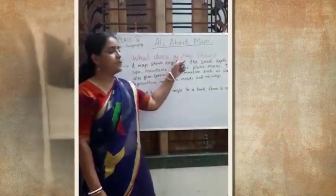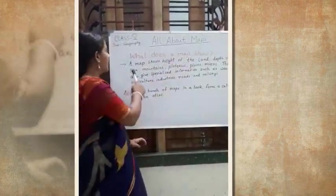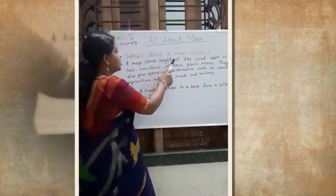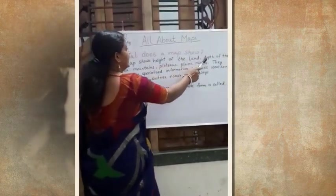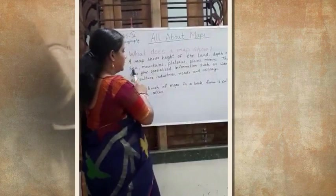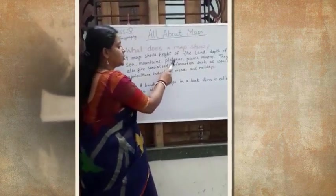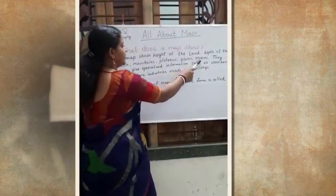Now, what does a map show? A map shows height of the land, depth of the sea, mountains, plateaus, plains, and rivers.